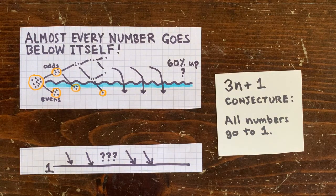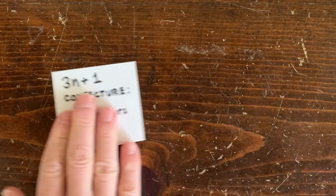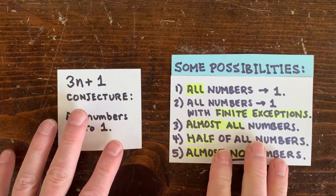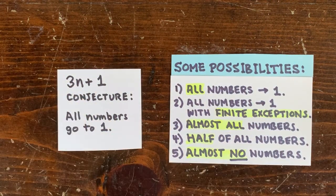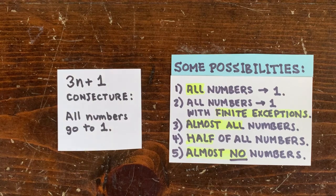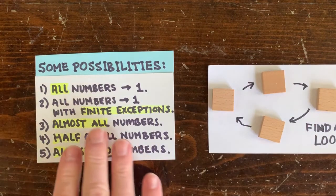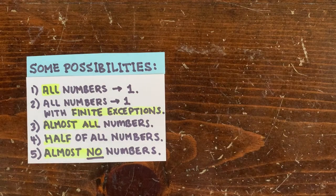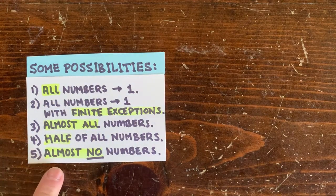Could we at least show that almost all numbers go to 1? Here are some possibilities. All numbers go to 1. All numbers go to 1 with a finite number of exceptions. Maybe there's a loop out there. Almost all numbers go to 1. Half the numbers go to 1. Almost no numbers go to 1.